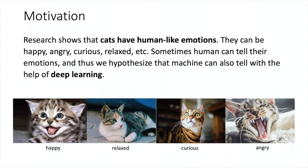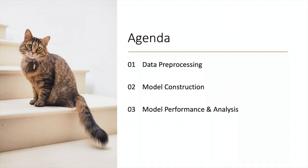Research shows that cats have human-like emotions. They can be happy, angry, curious, relaxed, etc. Sometimes humans can tell their emotions, and thus we hypothesize that machines can also tell with the help of deep learning. So in this project, we try to build our own deep learning model to unfold the emotions of cats.